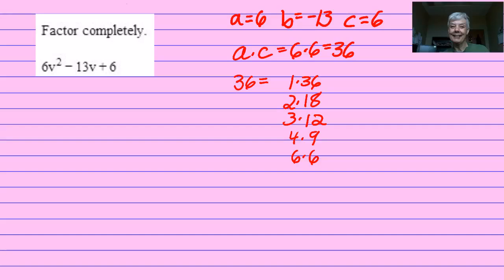Since positive 36 also equals a negative times a negative, we'll multiply negative 1 times negative 36, negative 2 times negative 18, negative 3 times negative 12, negative 4 times negative 9, and negative 6 times negative 6.